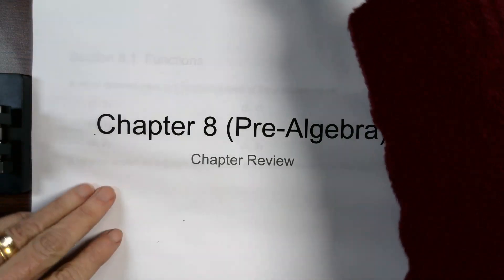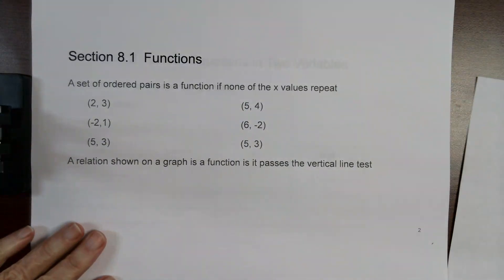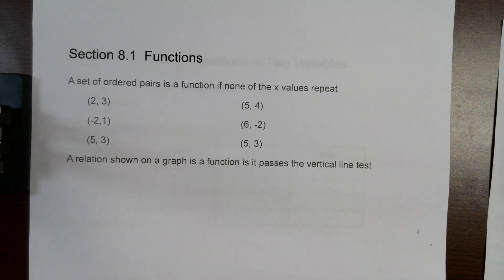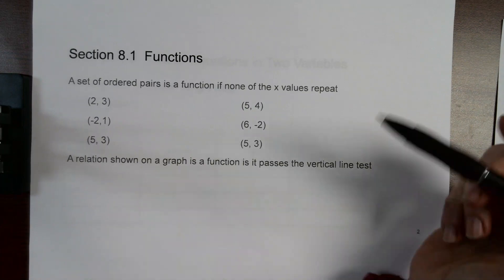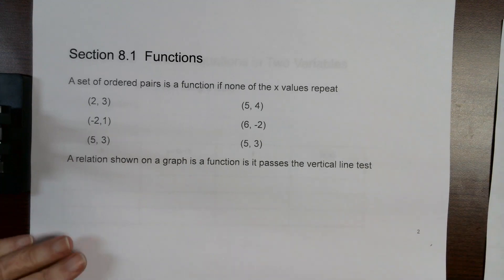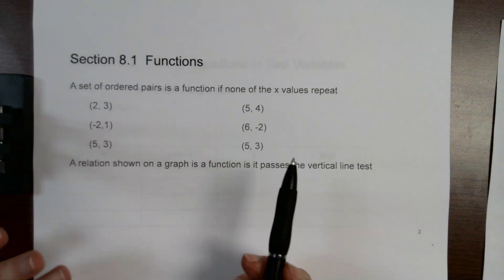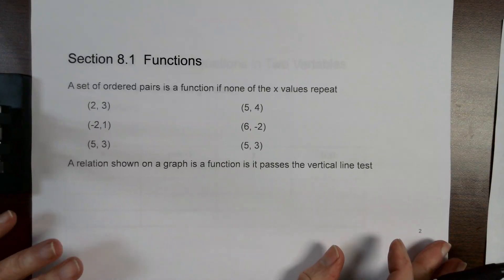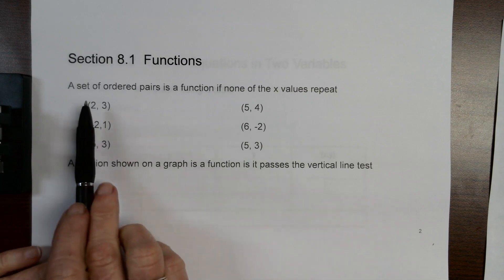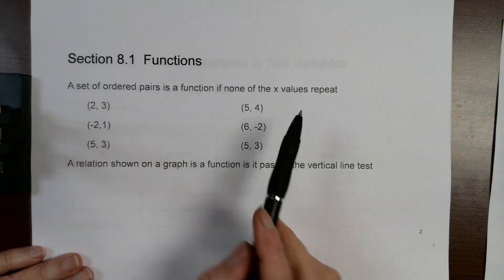This is the chapter review. Section 8.1 in this chapter had to do with functions. A function is a set of ordered pairs or a relation where there is exactly one value of y for every x. It would pass one of two tests depending on whether you have ordered pairs or a graph. A set of ordered pairs is a function if none of the x values are repeated.